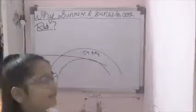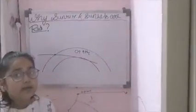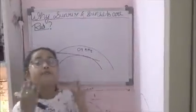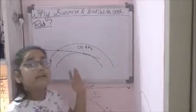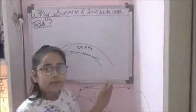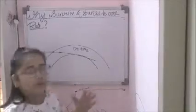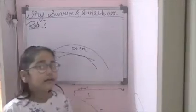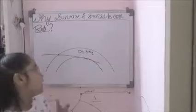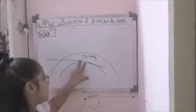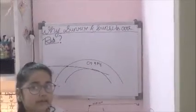Now, the same is the case with sunset. At sunset the sun is in the west, and again it is near the horizon. The sunlight has to travel through the longest distance through the atmosphere.